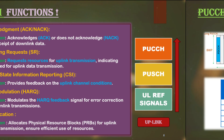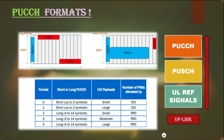PUCCH also supports multiple formats depending on the OFDM symbols. These are combinations used to allocate PUCCH resources in the resource blocks in the time and frequency domain. Criteria include how many symbols to allocate for PUCCH and how many UEs or devices the cell is planned to serve.